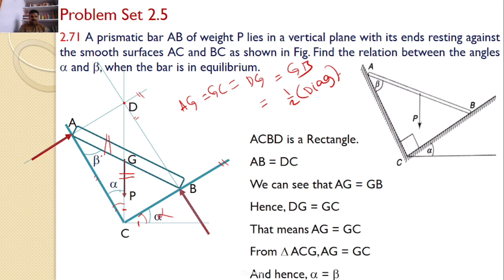Hence the conclusion is that the two angles, that is alpha and beta, must be the same to satisfy the equilibrium condition.